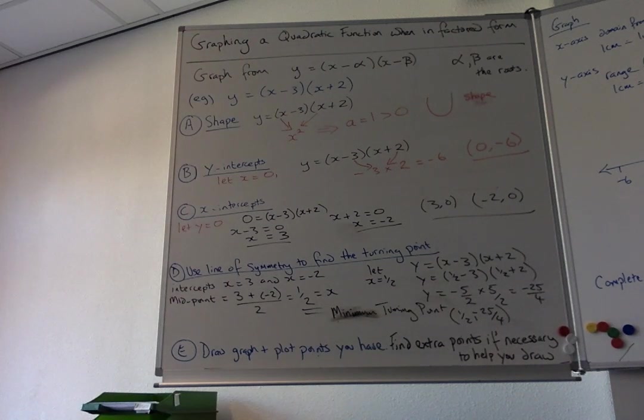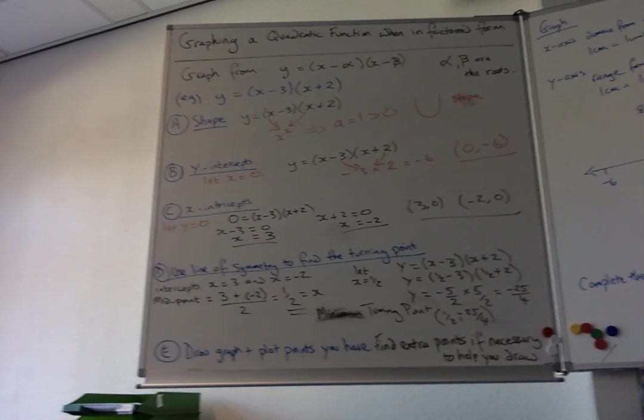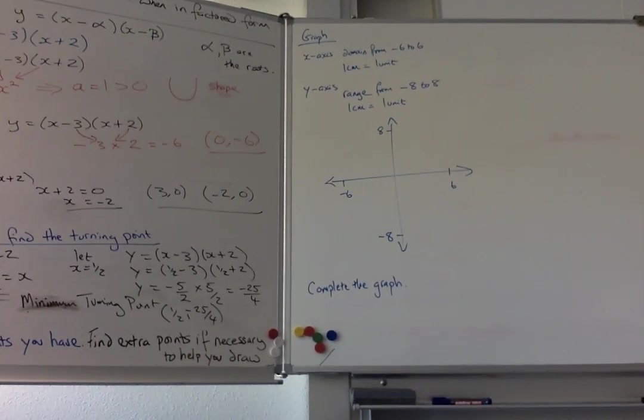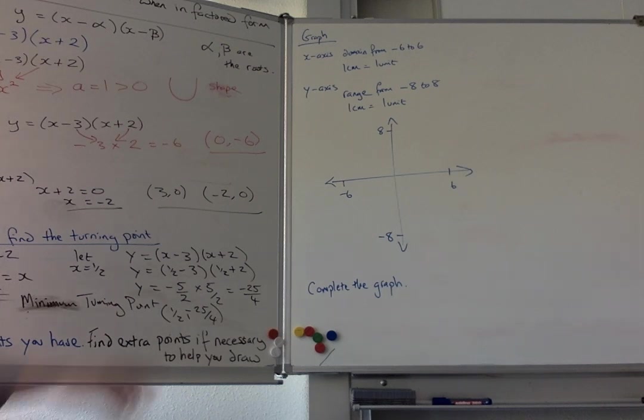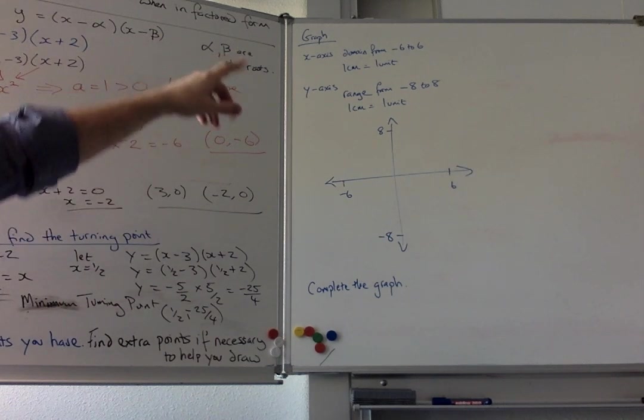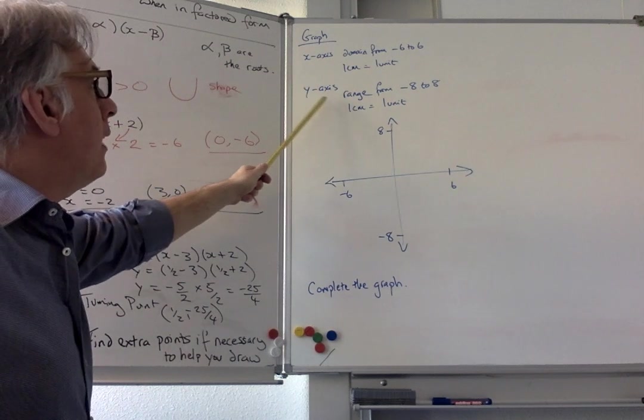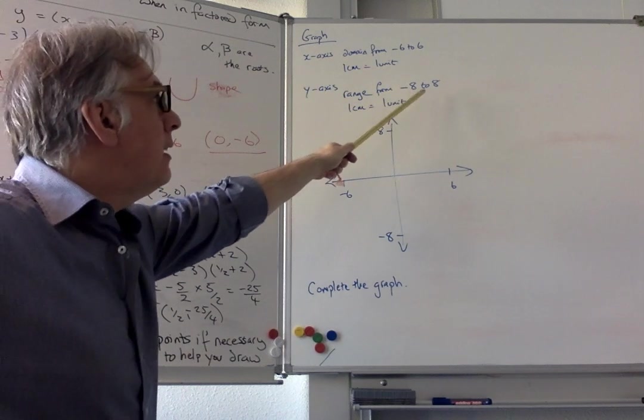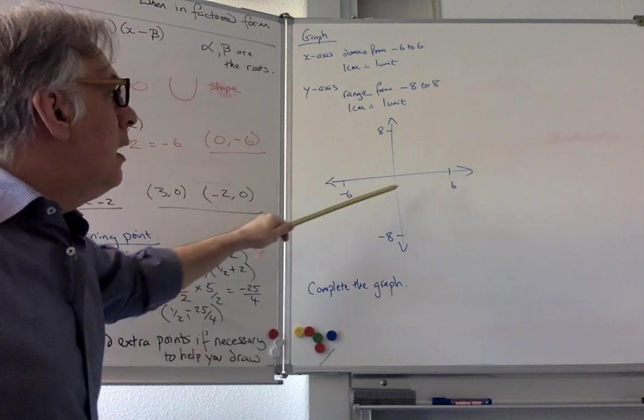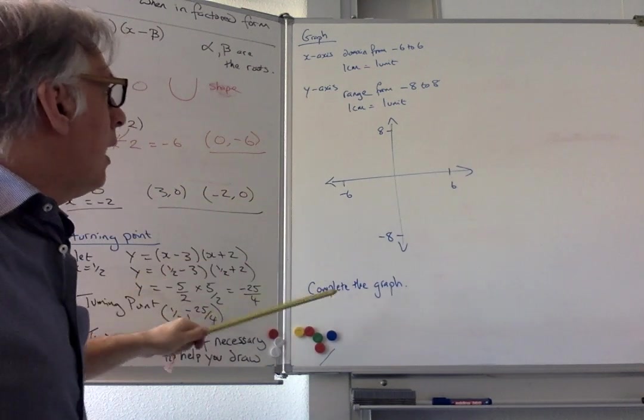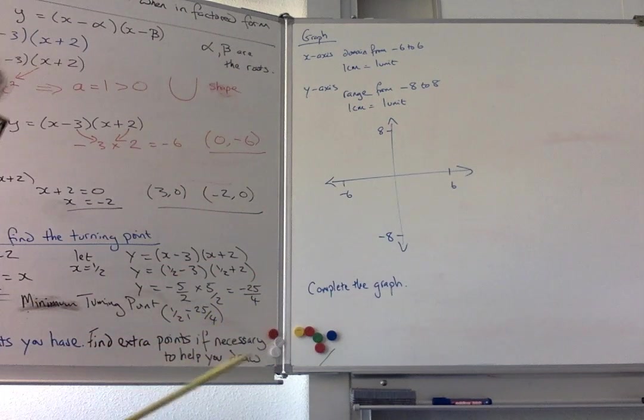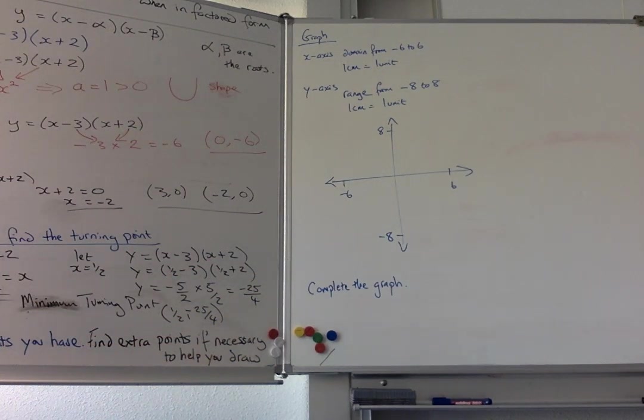For the graph: the x-axis domain goes from minus 6 to 6, 1 cm per unit. The y-axis range goes from minus 8 to 8, 1 cm per unit. Make each square worth 1 unit, put the points on that you need, and then determine if you need to find extra points before you draw it with a smooth u-shaped curve.